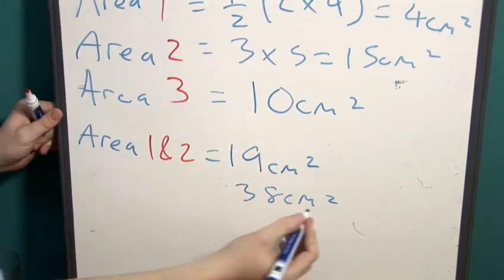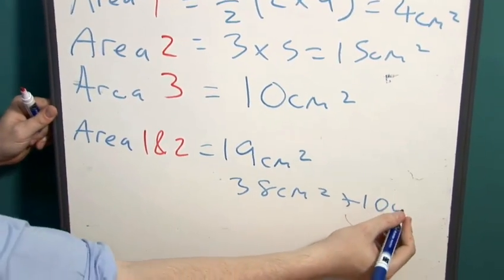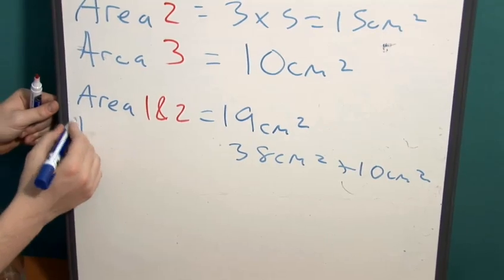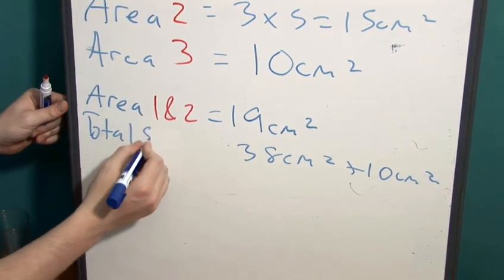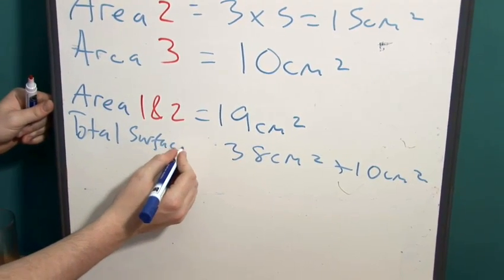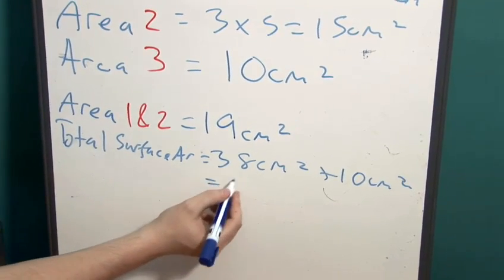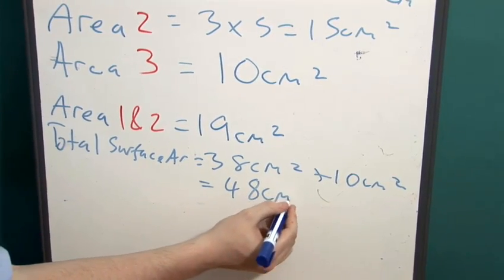Then we add on the base, which is ten centimetres squared, and this gives us the final total surface area, which is equal to forty-eight centimetres squared.